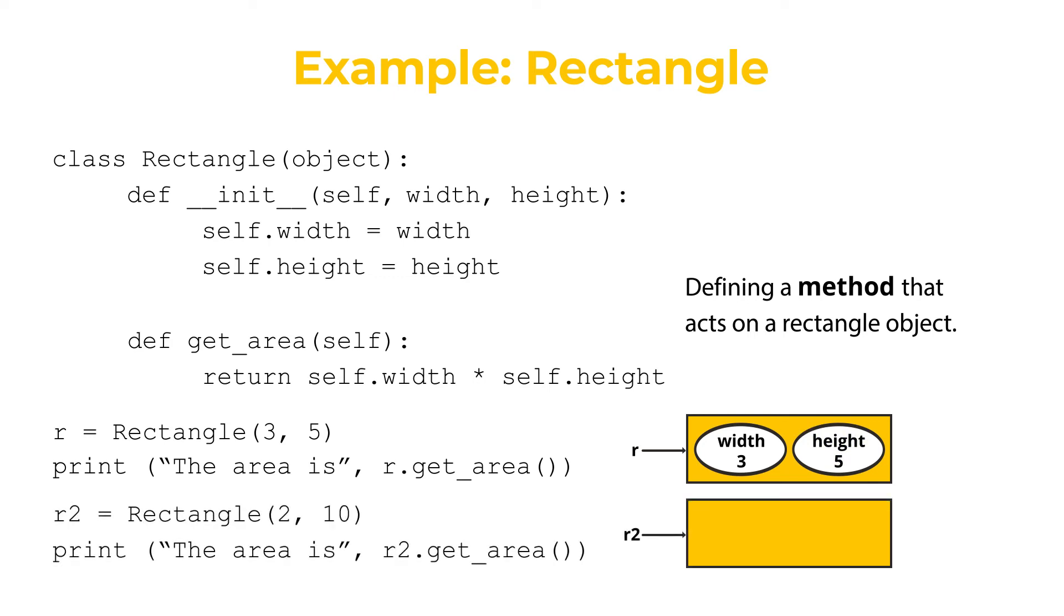We can create another rectangle, r2. The width is 2 and the height is 10. And we can print the area by calling r2.get_area(). In this case, r2 is passed as an argument to the method. So self becomes r2, and we return r2.width times r2.height.